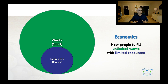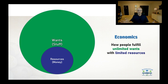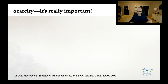Given the reality that we want way more than we could ever possibly create, produce, or buy, a formal definition of economics is simply: how people fulfill unlimited wants with limited resources. How do we take what we have and distribute it in a way that efficiently uses what we have? There's a very important idea in this definition — scarcity.